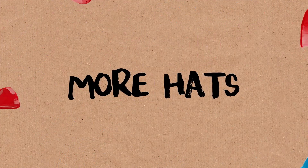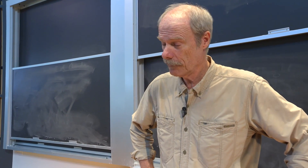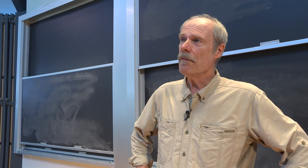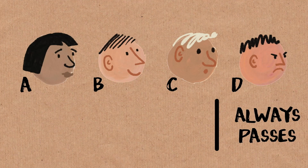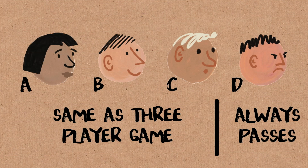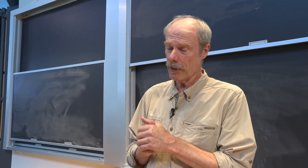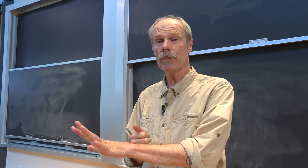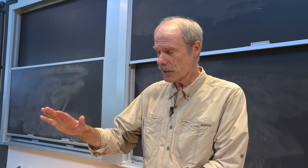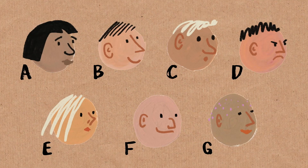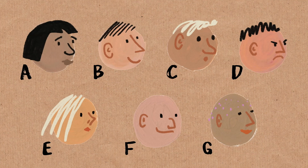If we have more than three players, things get interesting. With four players, Dave can agree to pass and Alice, Bob, and Charlie play the three-person game, giving a probability of three-quarters — and rather surprisingly, four players can't do any better than that. With five and six people there are more complicated, messier strategies. But with seven people there is a nice strategy again that gives the best possible probability of success.